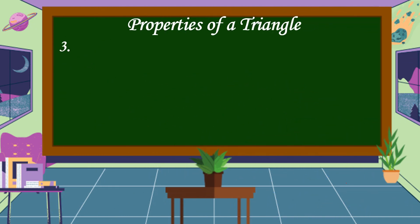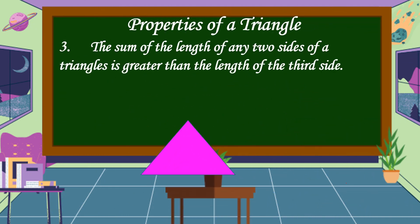The third property: the sum of the length of any two sides of a triangle is greater than the length of the third side.